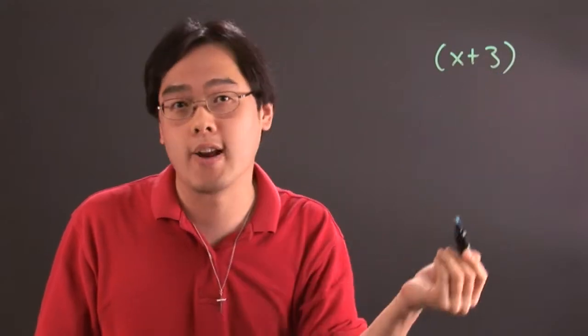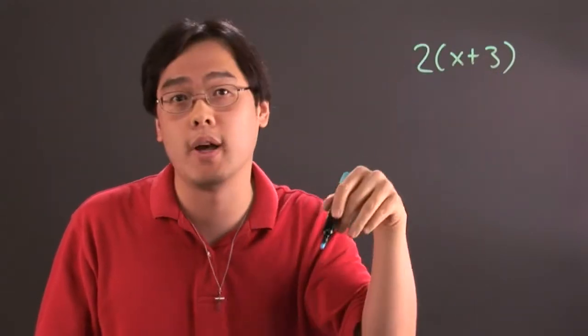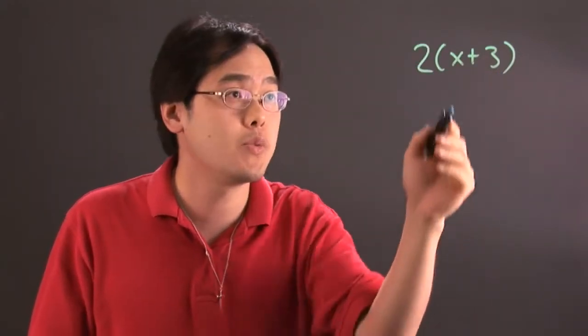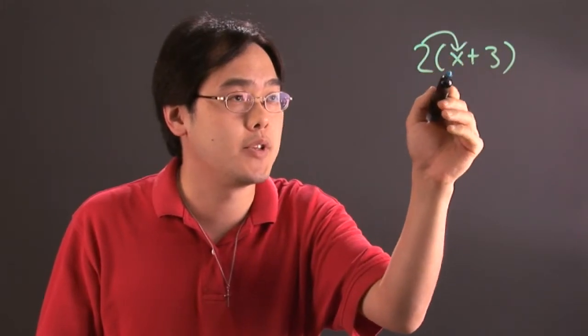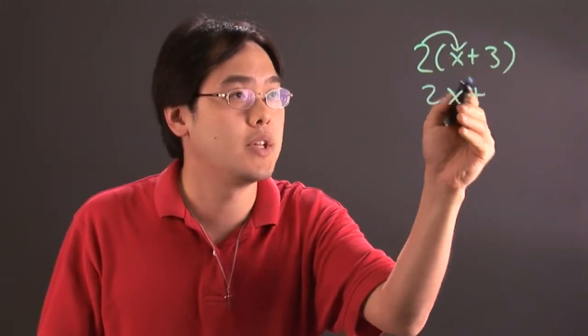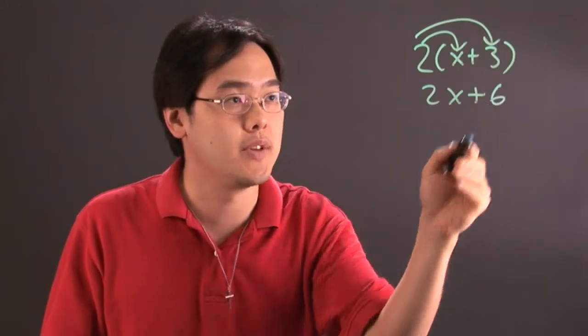So if you have an expression of x plus 3 and you're asked to multiply by a factor of 2, that pretty much means you got to multiply whatever you have by 2. So in this case you just multiply the 2 times x plus 3 and you have 2x plus 2 times 3 is going to give you 6.